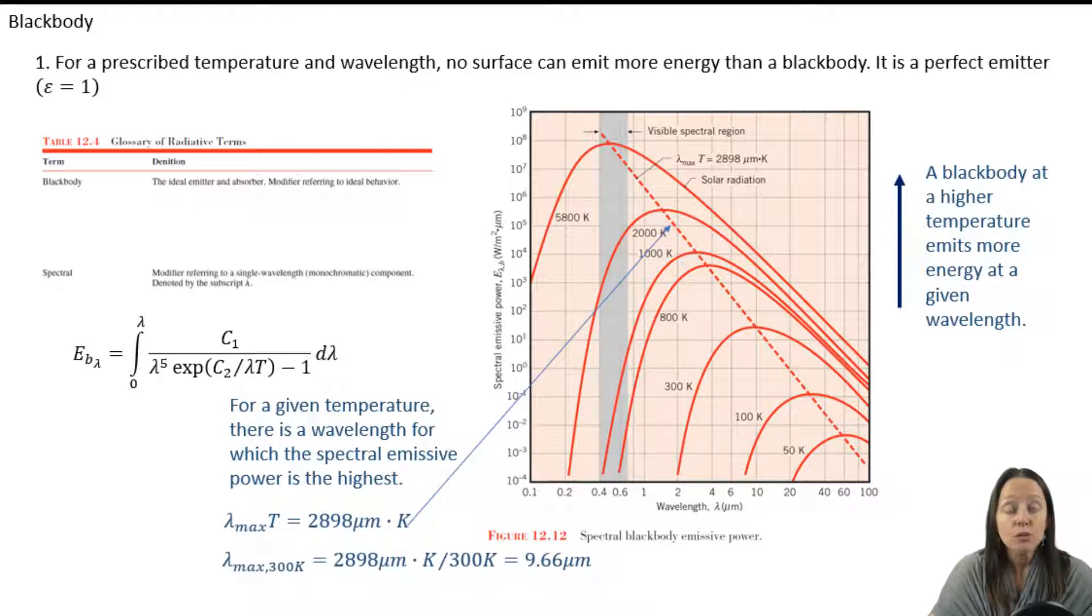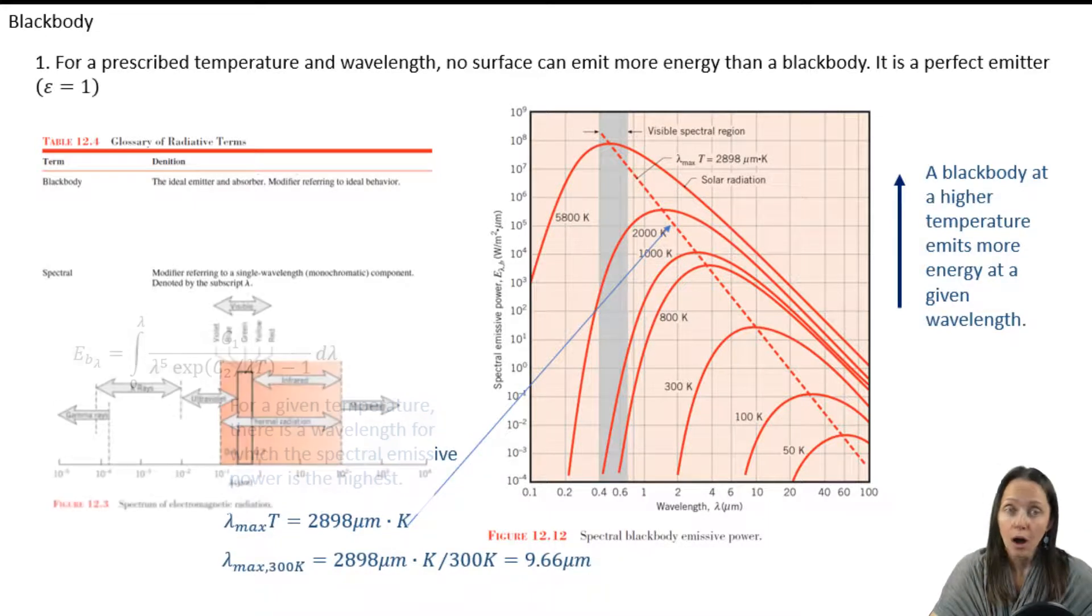So objects at room temperature, for example, emit most of their radiation at 9.66 microns, which, if you recall, is in that infrared region of the spectrum.